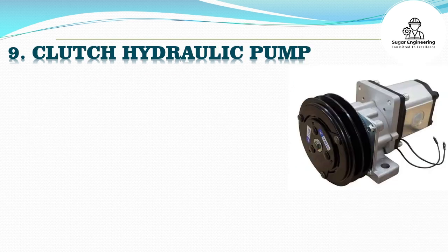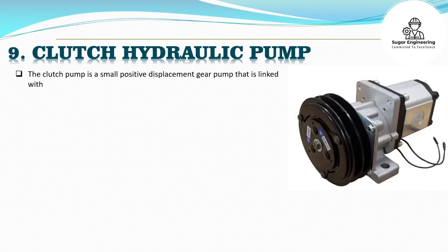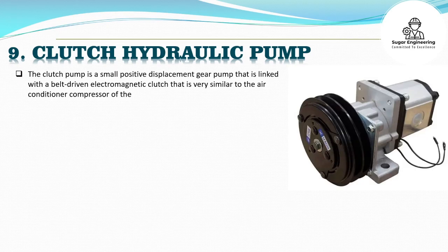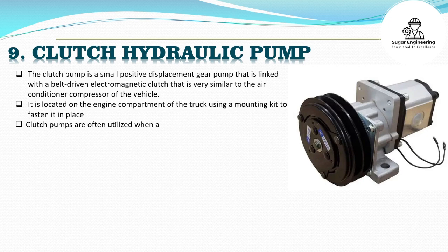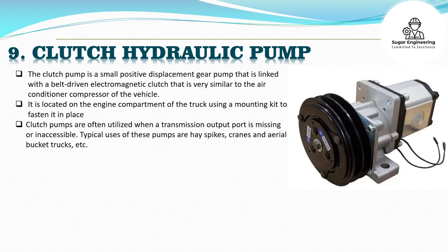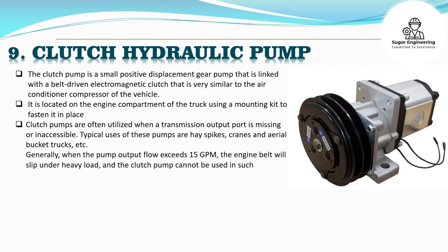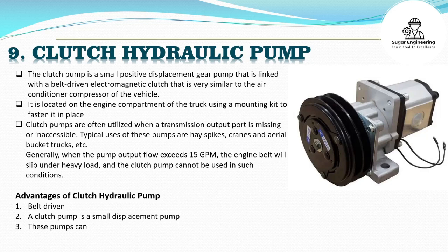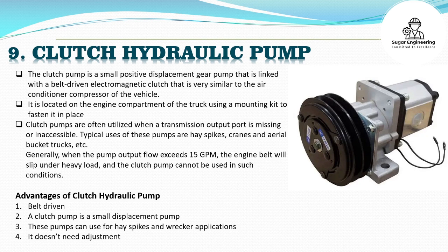The clutch pump is a small positive displacement gear pump that is linked with a belt-driven electromagnetic clutch, very similar to the air conditioner compressor of a vehicle. It is located in the engine compartment of the truck using a mounting kit to fasten it in place. Clutch pumps are often utilized when a transmission output port is missing or inaccessible. Typical uses include hay spikes, cranes, and aerial bucket trucks. Generally, when the pump output flow exceeds 15 gpm, the engine belt will slip under heavy load and the clutch pump cannot be used in such conditions.